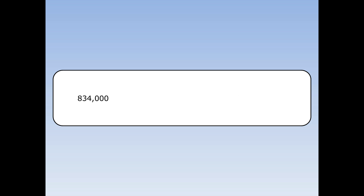Eight hundred and thirty-four thousand. What number should I choose at the front? I can't choose eight hundred and thirty-four, because it's bigger than ten. Eighty-three point four is also bigger than ten. I need to choose eight point three four times a hundred thousand. That's equal to eight point three four times ten to the power of five.